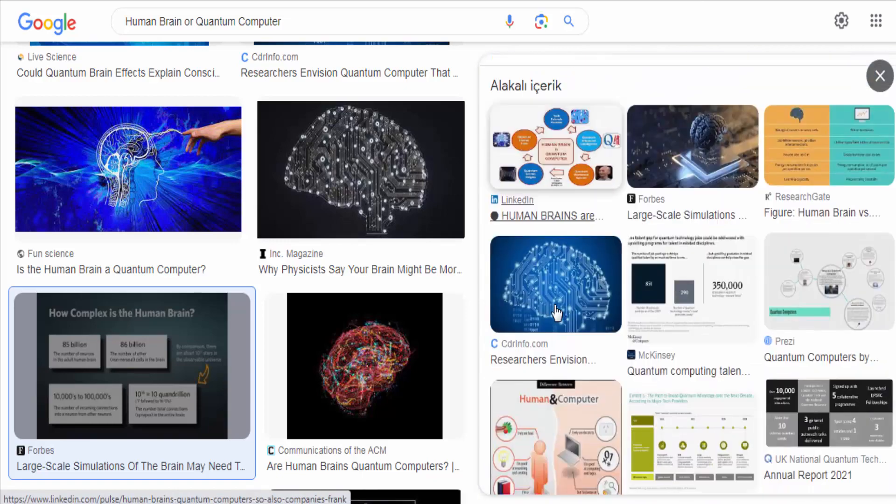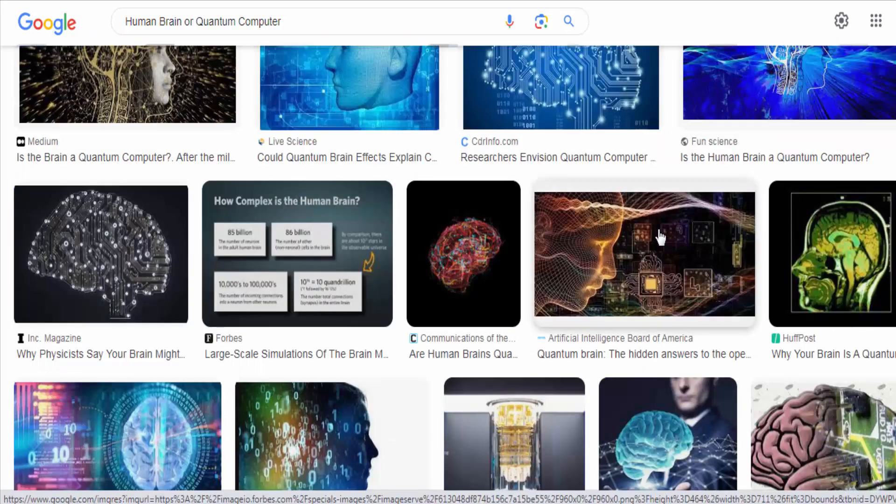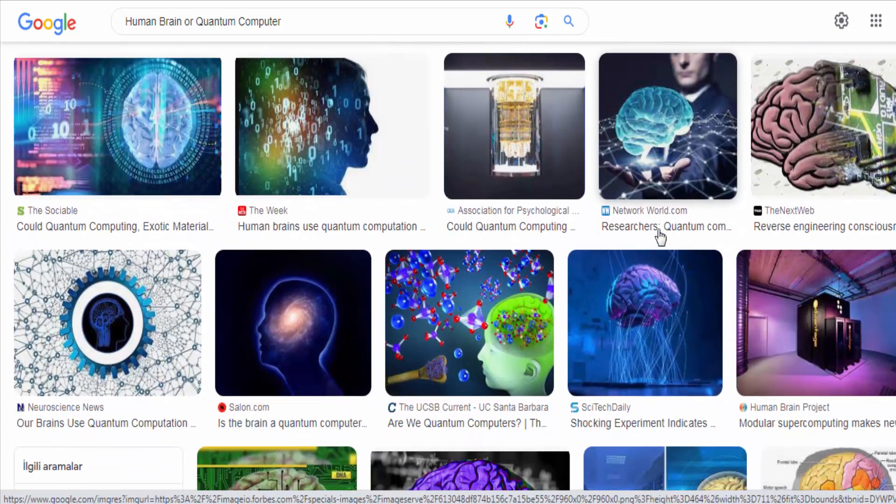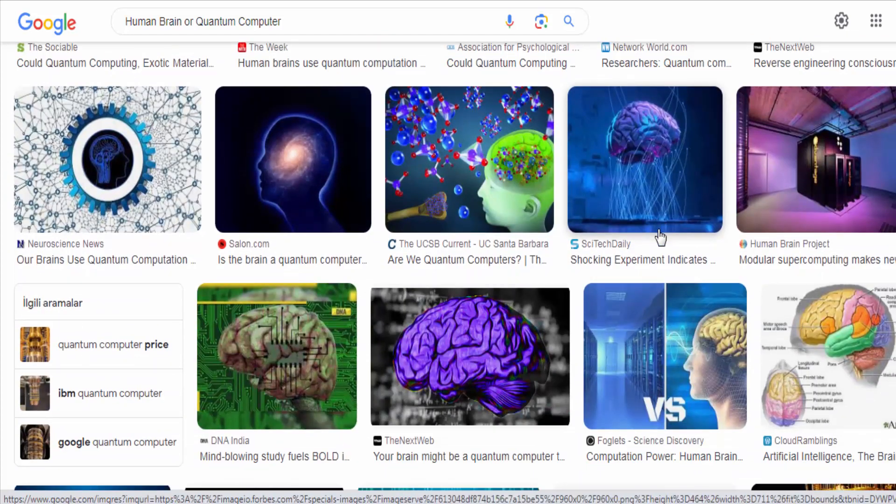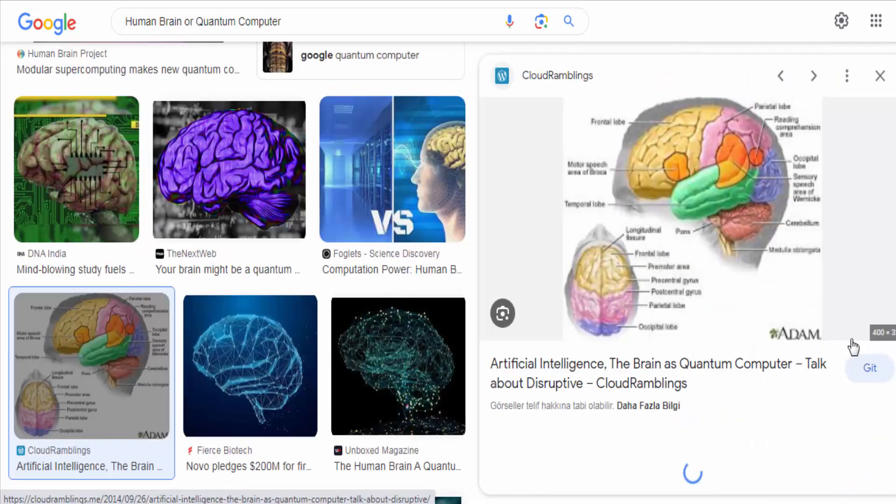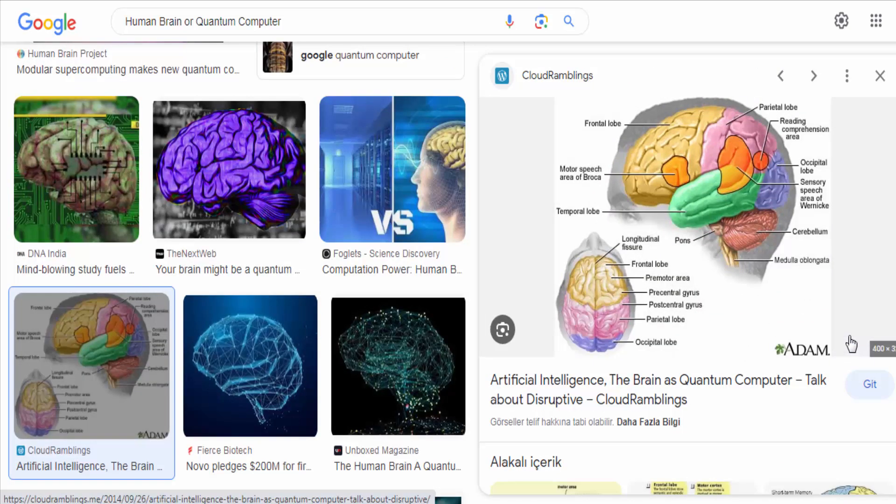The human brain is the product of natural evolution and gives rise to human consciousness and intelligence, while quantum computers are an emerging technology that harnesses the principles of quantum mechanics to perform specialized computational tasks.